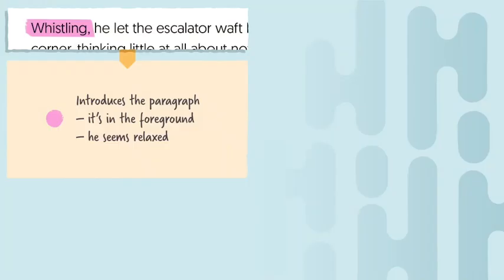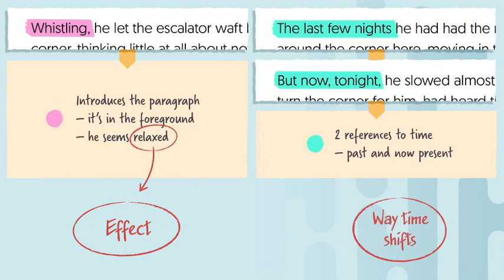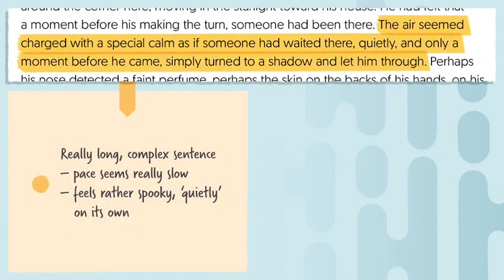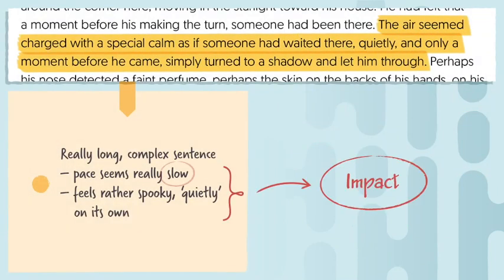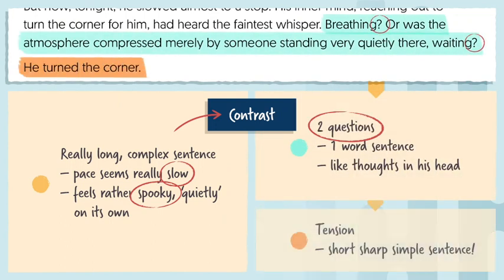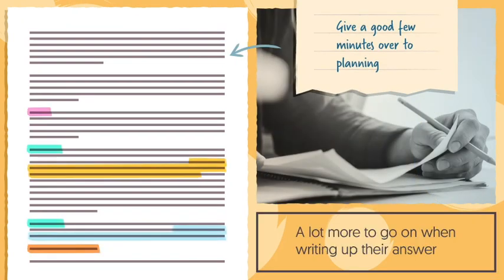First, they've noted that the paragraph begins in an unusual way, with the word 'whistling' placed in the foreground. This gives them a chance to think about the effect of this in presenting Montag as relaxed at this point. By looking at the bigger picture, they notice a difference in the way the time shifts in the passage, from the past right into the present. Then the student hasn't just labelled the long sentence as complex — they've thought in advance about the impact of its length and how it seems to slow things down and create a rather spooky feeling of anticipation. This has allowed them to contrast this with the questioning and the short, simple sentence at the end, and then note the changes. We can see here that it's a good idea to give a good few minutes over to planning this task, as this student has a lot more to go on when writing up their answer.